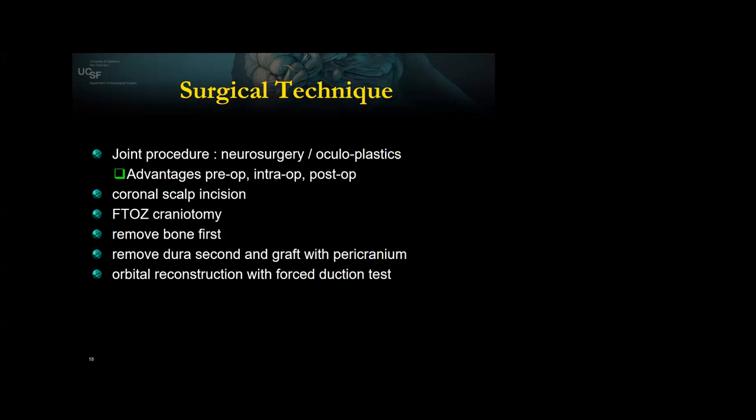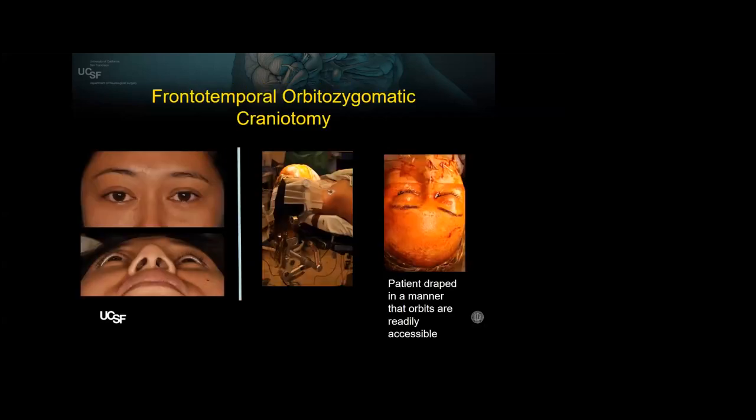After reconstruction, do the orbital reconstruction with oculoplastics. It's important after the reconstruction to perform what is called a forced duction test. The oculoplastic surgeon will grab the tendons of the extraocular muscles and move the eye through all primary positions of vision to ensure there's no entrapment of the muscle by the implant.